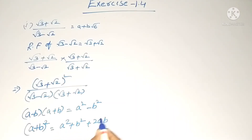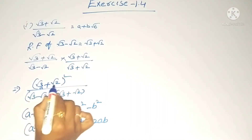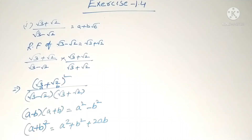In the numerator formula a² + 2ab + b², in the place of a there is √3 and in the place of b there is √2. I will substitute these into the formula.